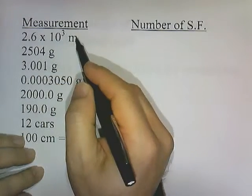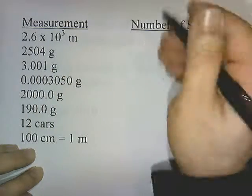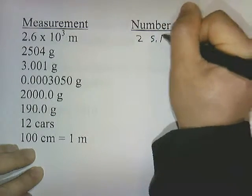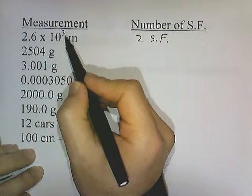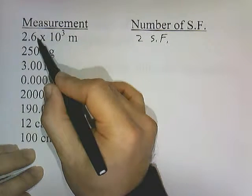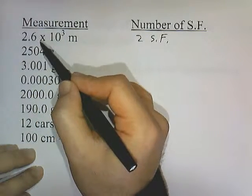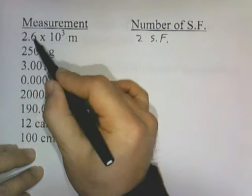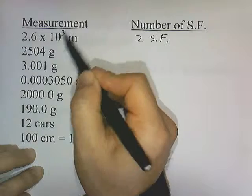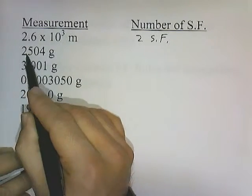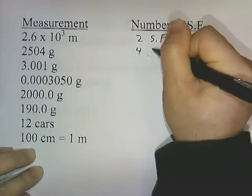2.6 times 10 to the 3rd — when you see the power of 10, you ignore it and only pay attention to the coefficient: two significant figures. When you see it written in scientific notation, they're telling you we don't know what the number is after the six — it could be 2.61 or 2.62. We know it's at least 2,000, so that's why it's 10 to the 3rd. 2,504 grams — zeros in between count: 4 significant figures.